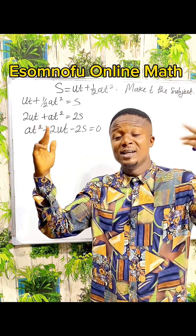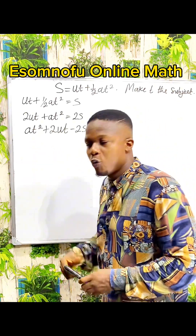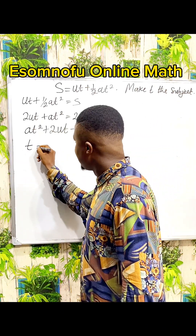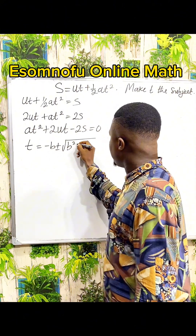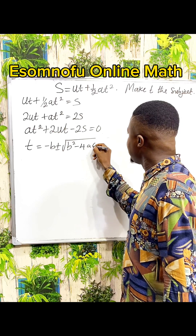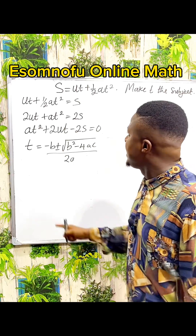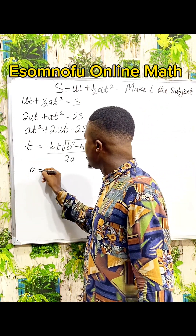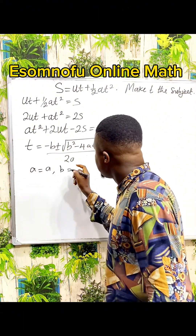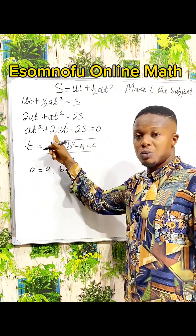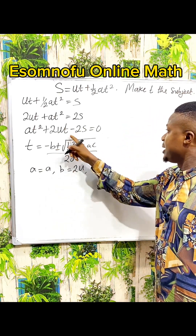Your only solution here is what students call the 'almighty formula' — but it is not almighty; only God is the almighty. So we call it the quadratic formula. Because we want to make T the subject, the quadratic formula gives us T equals minus B plus or minus the square root of B squared minus 4AC, all over 2A. Our A is the coefficient of the squared term, which is a. Our B is the coefficient of T, which is 2U. Our C is the constant term, which is minus 2S.